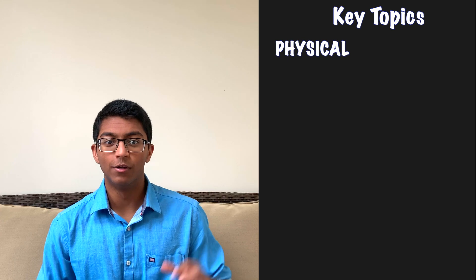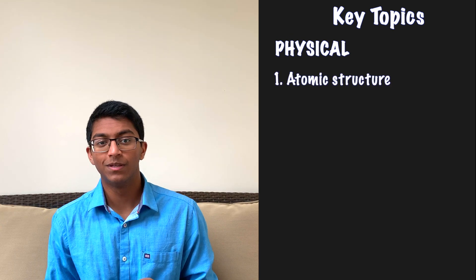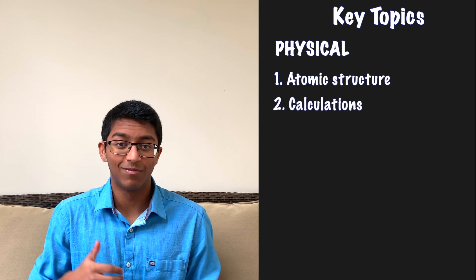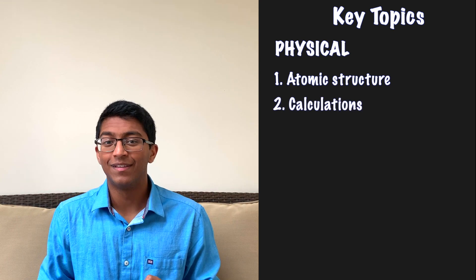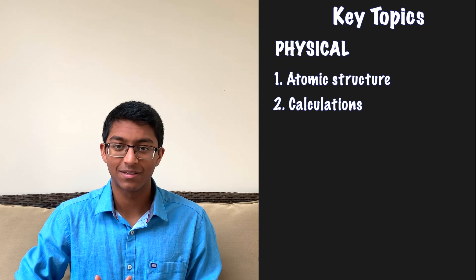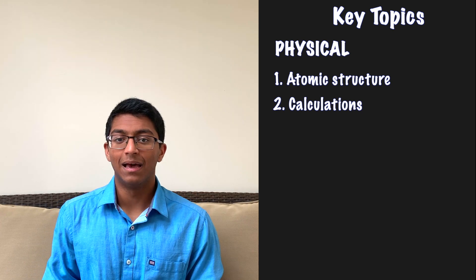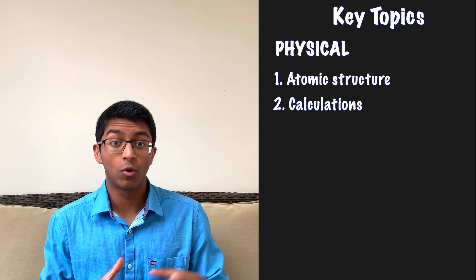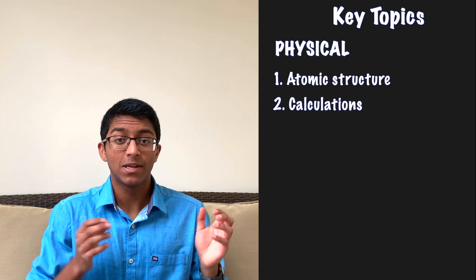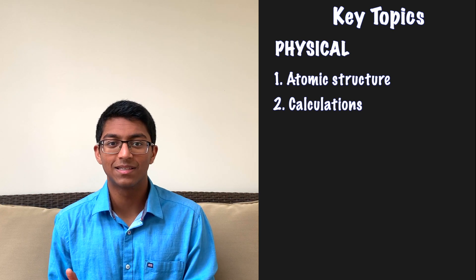The key concepts in physical chemistry are the basic atomic structure and electron configuration. Calculations — this includes stuff like mass = Mr × mol, n = CV, the gas equation, percentage yield, and atom economy. It's important to be proficient with these and really practice them and get to grips with complicated examples, because quite a lot of the marks in A-level chemistry are solely based on these skills.